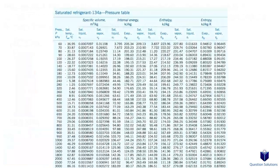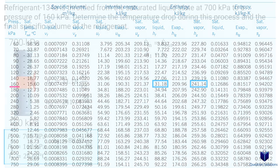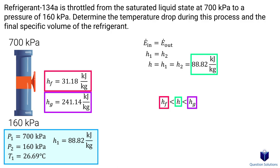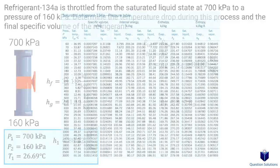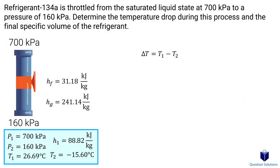Now we need to look at the table for a pressure of 160 kilopascals and note the saturated liquid enthalpy and saturated vapor enthalpy values. Since our final enthalpy is less than the saturated vapor enthalpy but greater than the saturated liquid enthalpy, the refrigerant is now a saturated mixture at the exit side of the valve. Going back to the table, the saturation temperature at 160 kilopascals is negative 15.6 degrees Celsius. We find the difference to get our temperature drop.